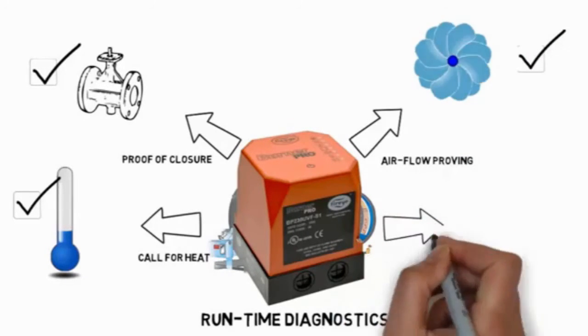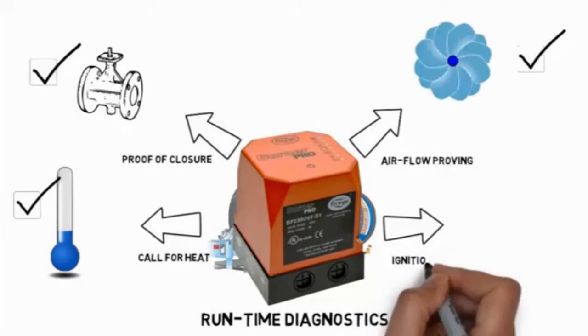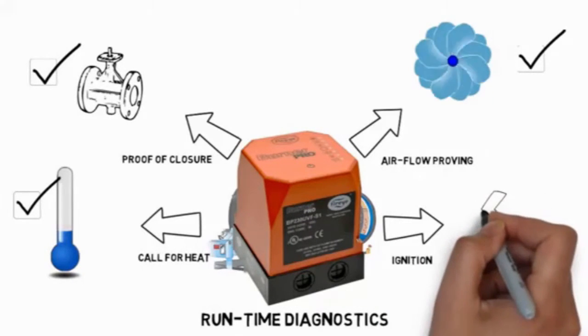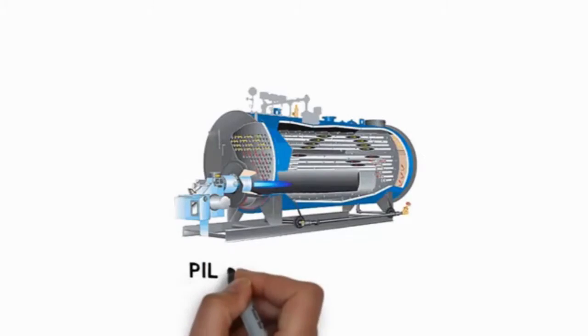The light off phase activates the ignition transformer. This then establishes the pilot followed by a main flame.